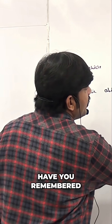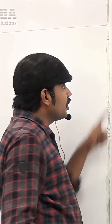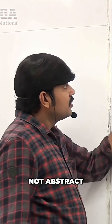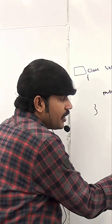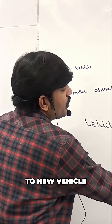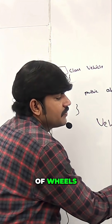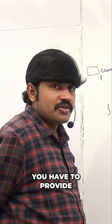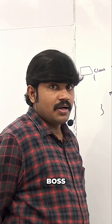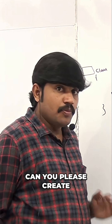As I covered in the last video, if this class is not abstract, then every person can create an object. If a person creates an object like 'Vehicle v = new Vehicle()' and then calls v.getNumberOfWheels(), what response can you provide? There is no implementation available.